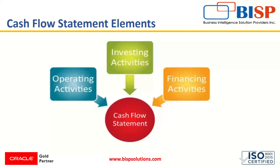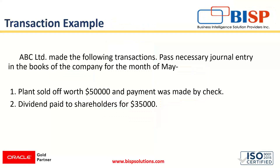Out of these three activities, today we have taken a scenario for the investing and financing activities. ABC Limited made the following transactions, and we have to pass a journal entry in the books of the company for the month of May. The first transaction: plant sold off worth $50,000 and payment was made by check. Plant is a fixed asset and a form of investment, so when this asset is sold off, it comes under the investing activity — cash is coming into the business by selling off the plant.